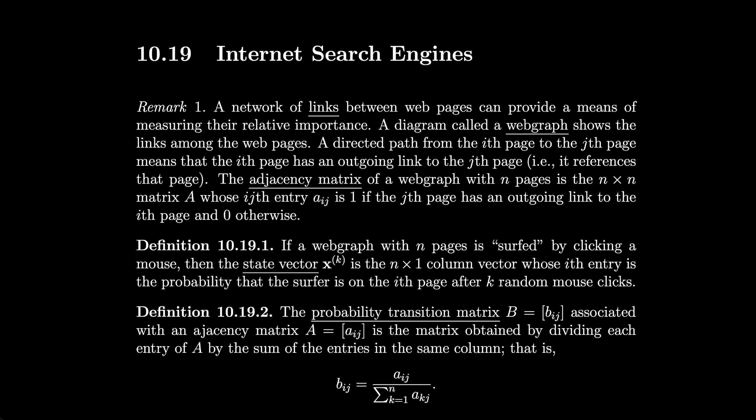A directed path from the ith page to the jth page means that the ith page has an outgoing link to the jth page. That is, it references that page. The adjacency matrix of a web graph with n pages is the n by n matrix A whose ijth entry, aij, is 1 if the jth page has an outgoing link to the ith page and 0 otherwise.